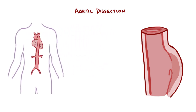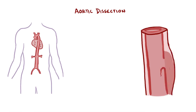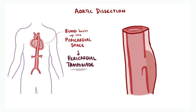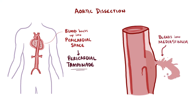Aortic dissections cause a whole bunch of other problems too. A lot of complications are related to where the blood in the false lumen flows. The blood could flow back up the aorta to the heart and enter the heart's pericardial space, filling it with blood and causing pericardial tamponade — a really bad and potentially fatal situation. The blood flowing through the false lumen could also puncture a hole through the tunica media and tunica externa and bleed into the mediastinum, which would be fatal very quickly due to significant blood loss. The tunneling blood could also puncture a hole in the tunica intima and return into the true lumen.